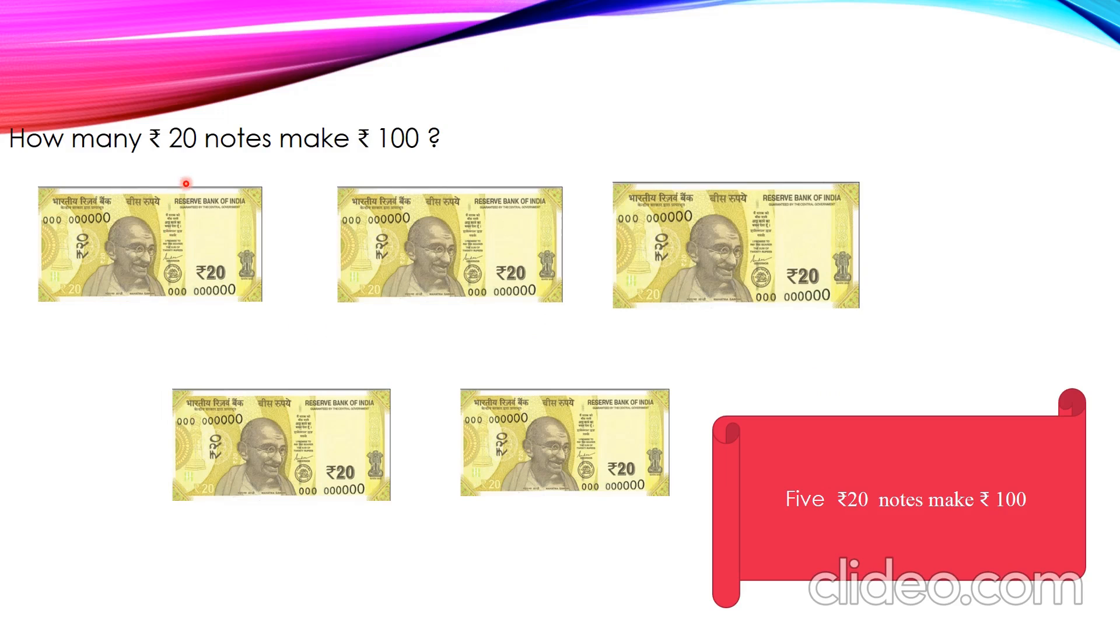How many 20 rupee note make 100 rupees? Come on. Let's take 1 20 rupees note. Plus 20. How much? It is 40. 40 plus 20. 60. 60 plus 20. 80. 80 plus 20. 100. Yes. Now, we got 100 rupees. How many notes we are using here? 1, 2, 3, 4, 5. So, we can say 5 20 rupee note make 100 rupees.